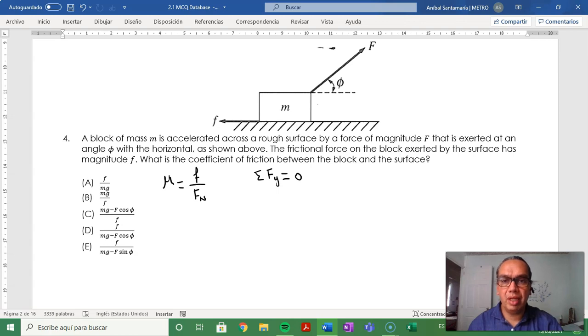Therefore, what we have here is the y component of the applied force f_y plus the normal force. Those are the forces acting in the positive direction, minus mg. And that's equal to 0.